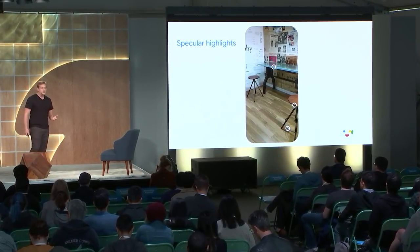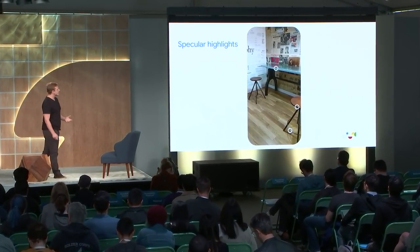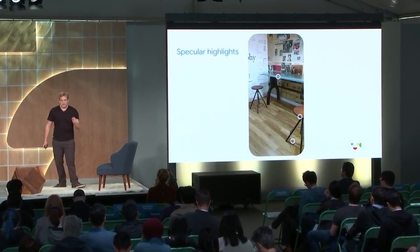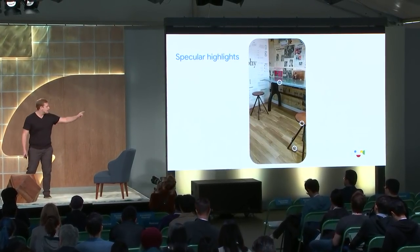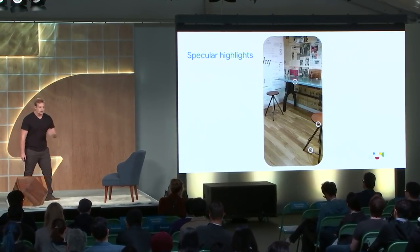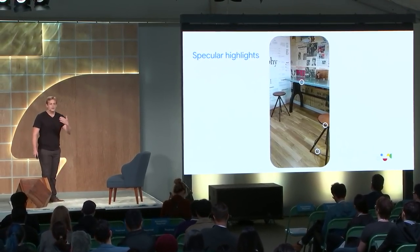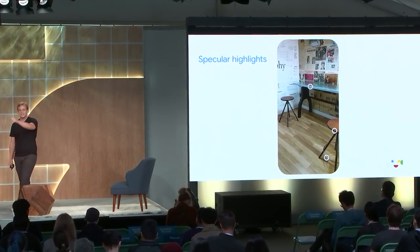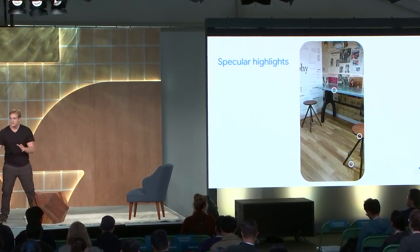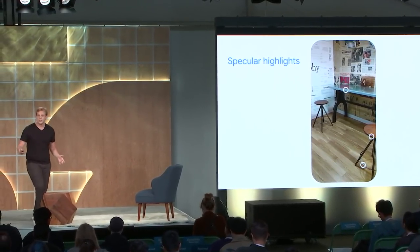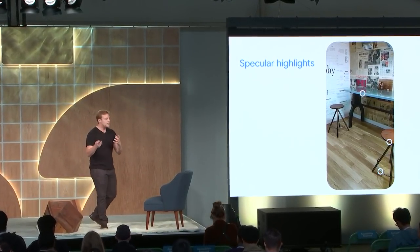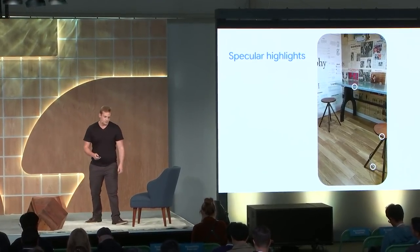Some of the first cues we look at are specular highlights — really shiny bits of surfaces, like the edge of a chair or table, where because of the material and geometry, we see a highlight from an incoming light. As we move around the scene, that highlight tends to move with us, because that's the way these kinds of highlights behave.